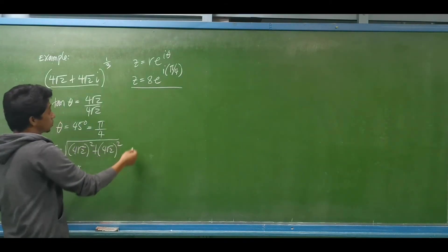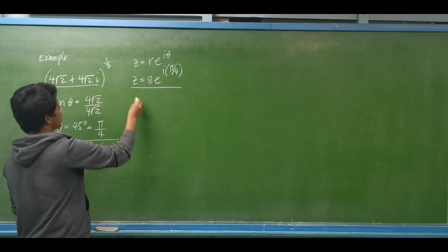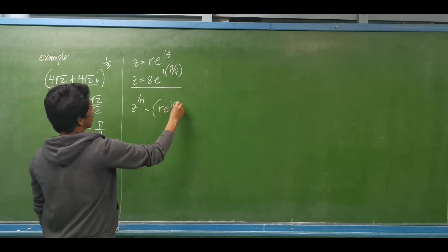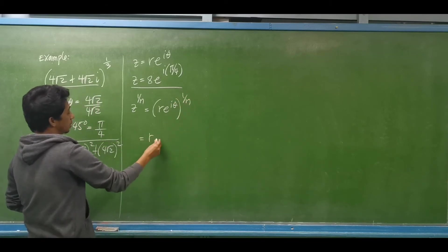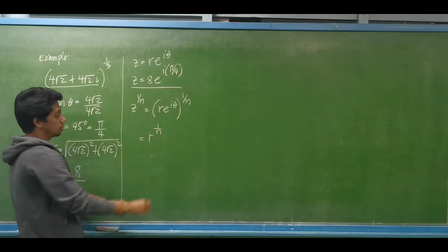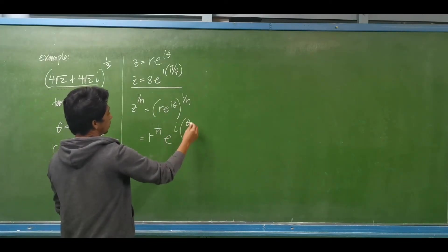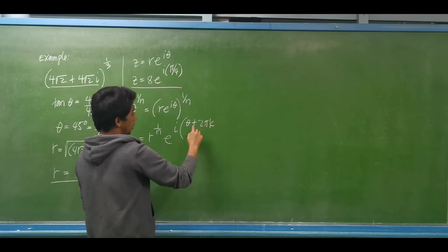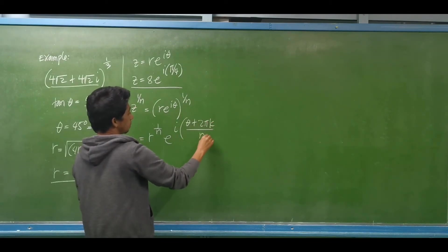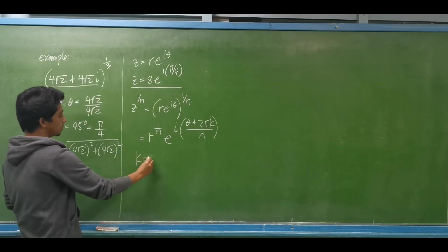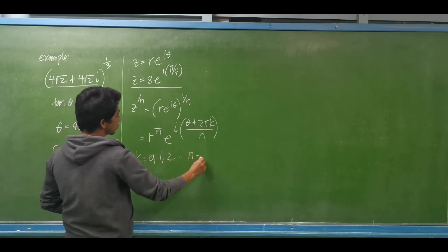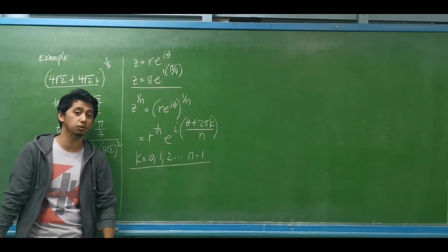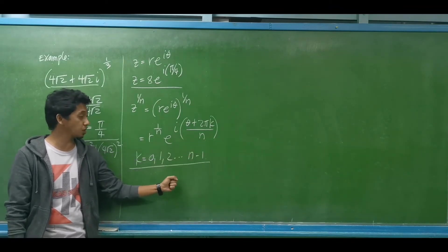To take the nth roots of a complex number in exponential form, Z raised to 1 over n equals R E raised to i theta, all raised to 1 over n. This equals the nth root of the modulus multiplied by E raised to i times the quantity theta plus 2 pi k, divided by n. Here k equals 0, 1, 2, up to n minus 1. This concept is very similar to finding roots in polar form — we are just copying the details.